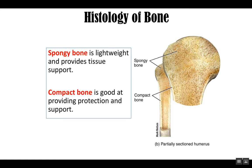Compact bone, as the name suggests, is more dense. It is stronger bone tissue, and both of these give a bone strength. But compact bone doesn't have the spaces in it for bone marrow, and it's found more along the superficial surface of a bone. So you can see the compact bone lying out here on the superficial surface of the bone, whereas on the inside you have the spongy bone.